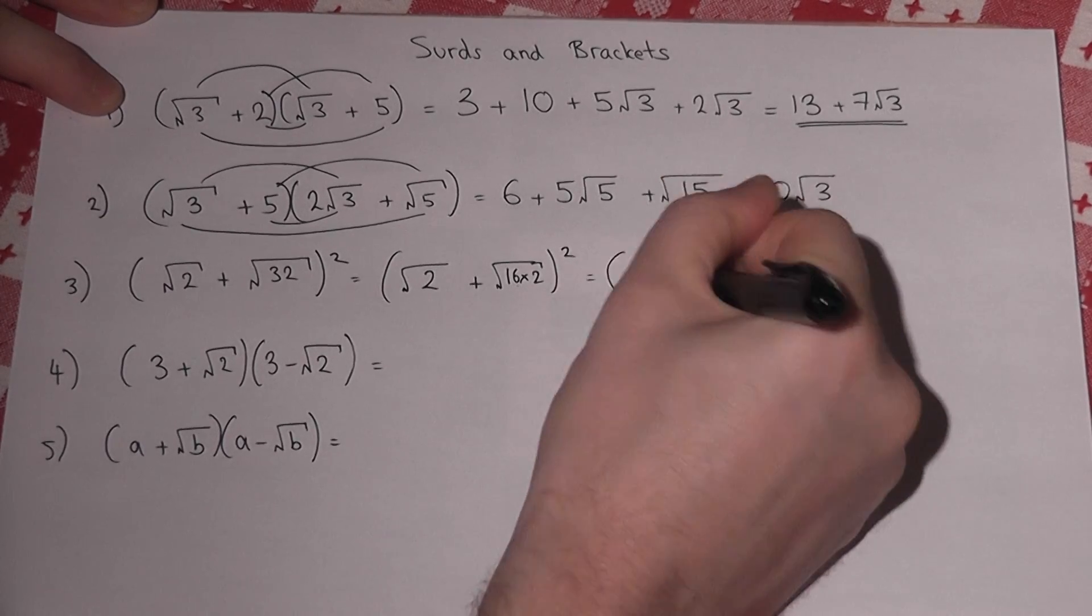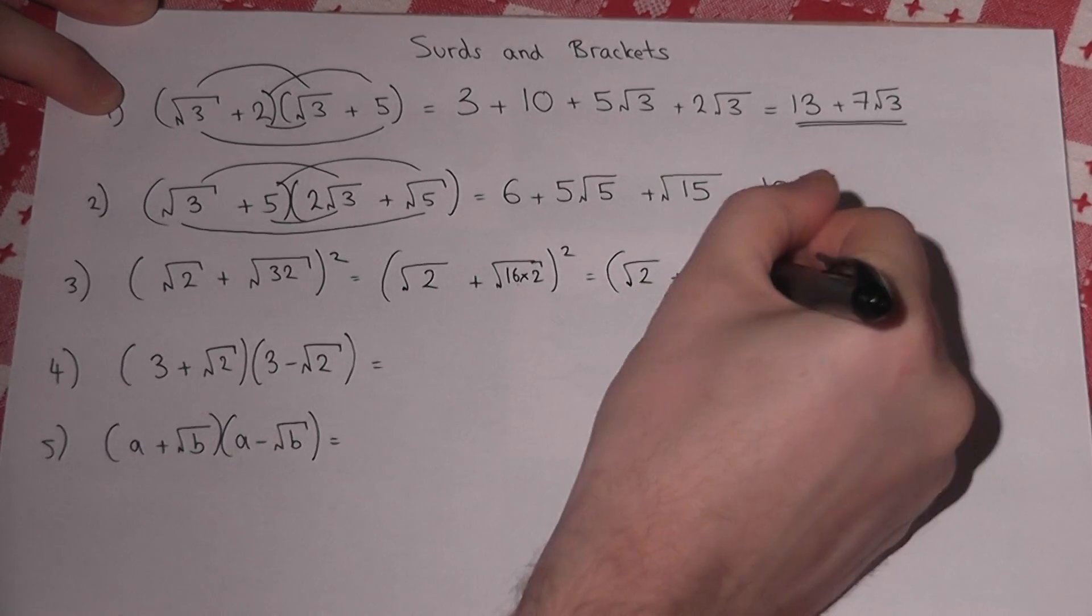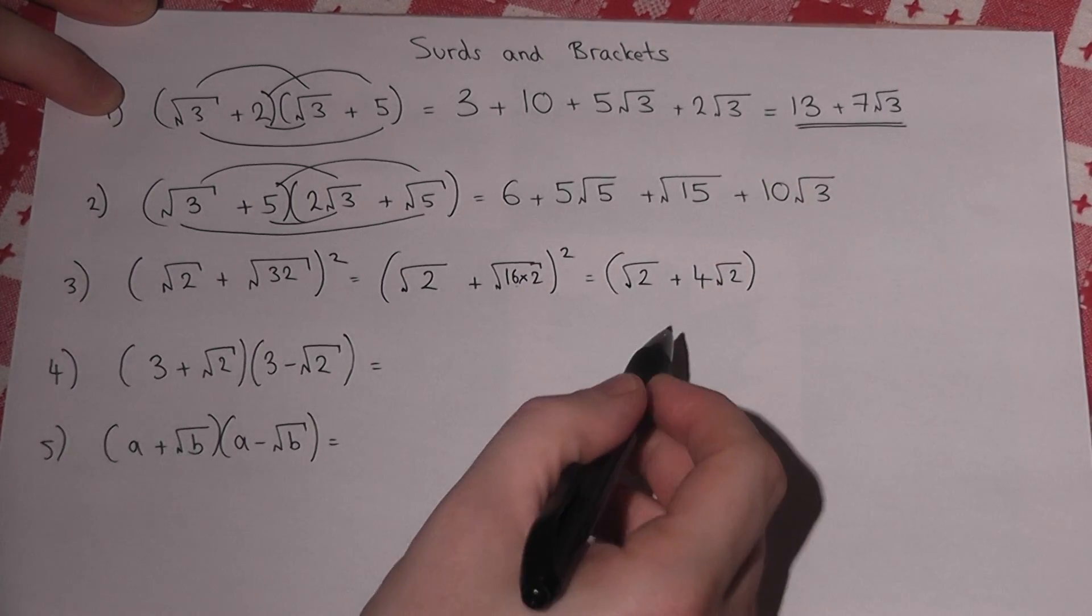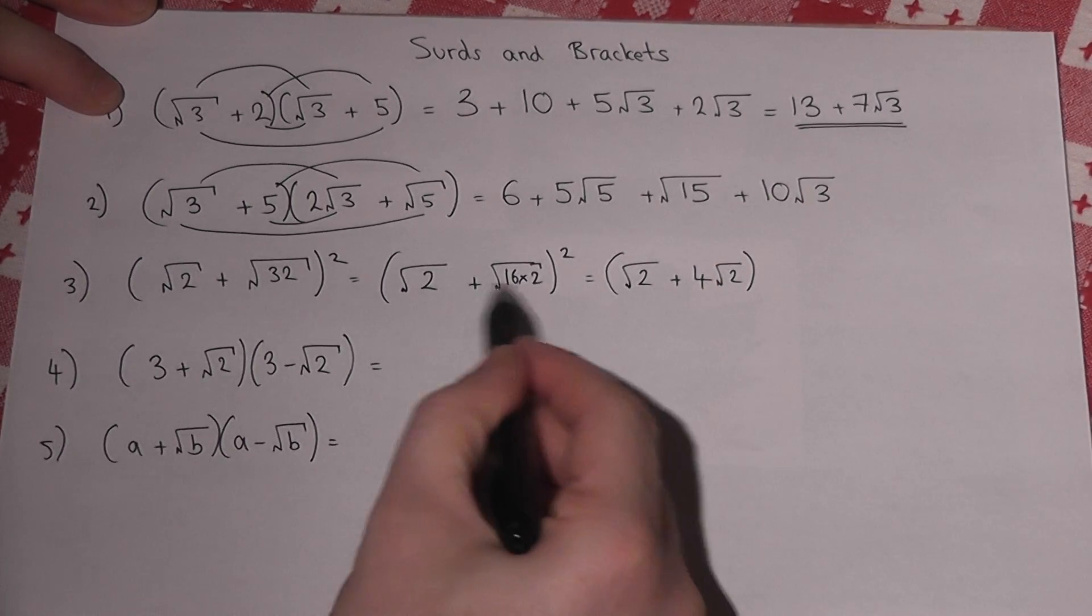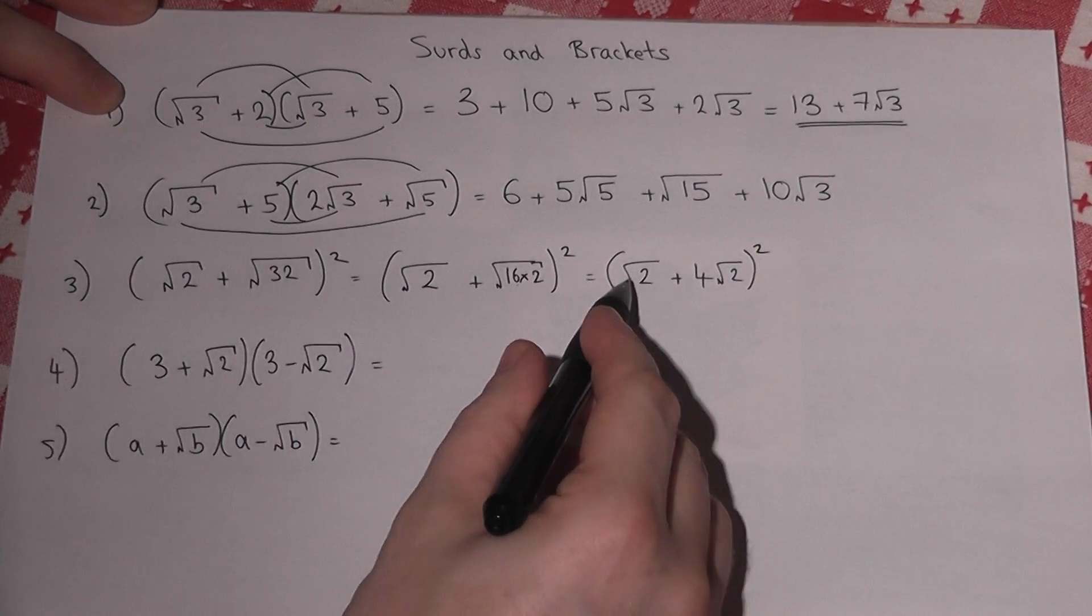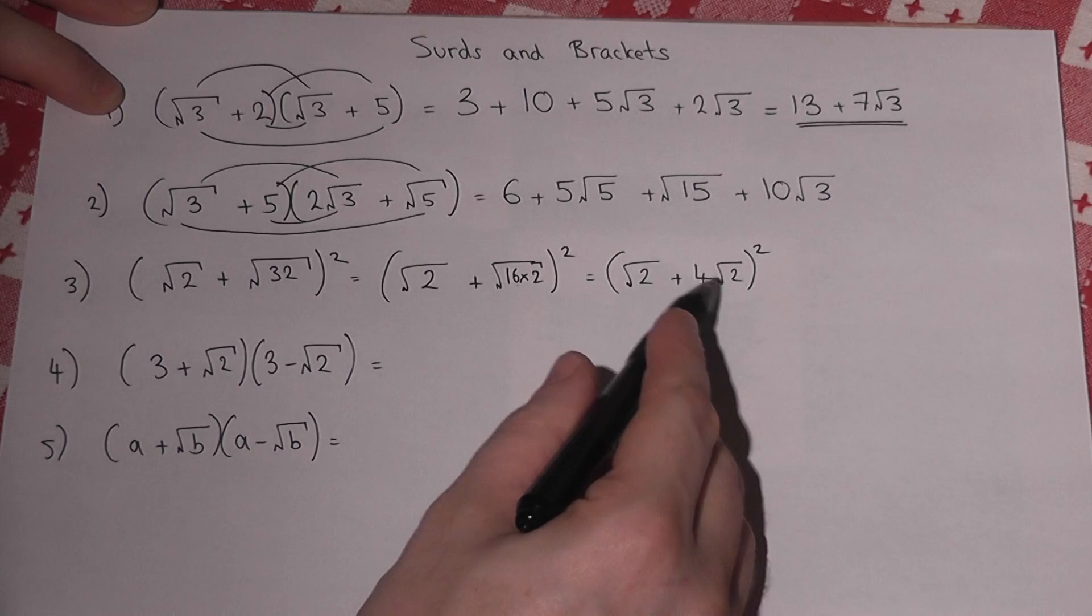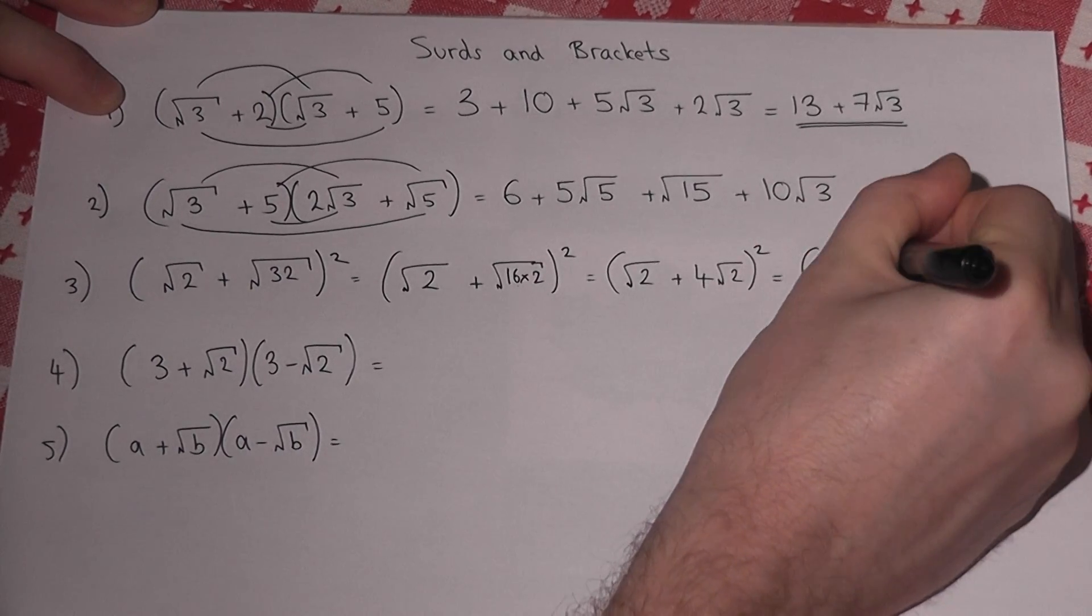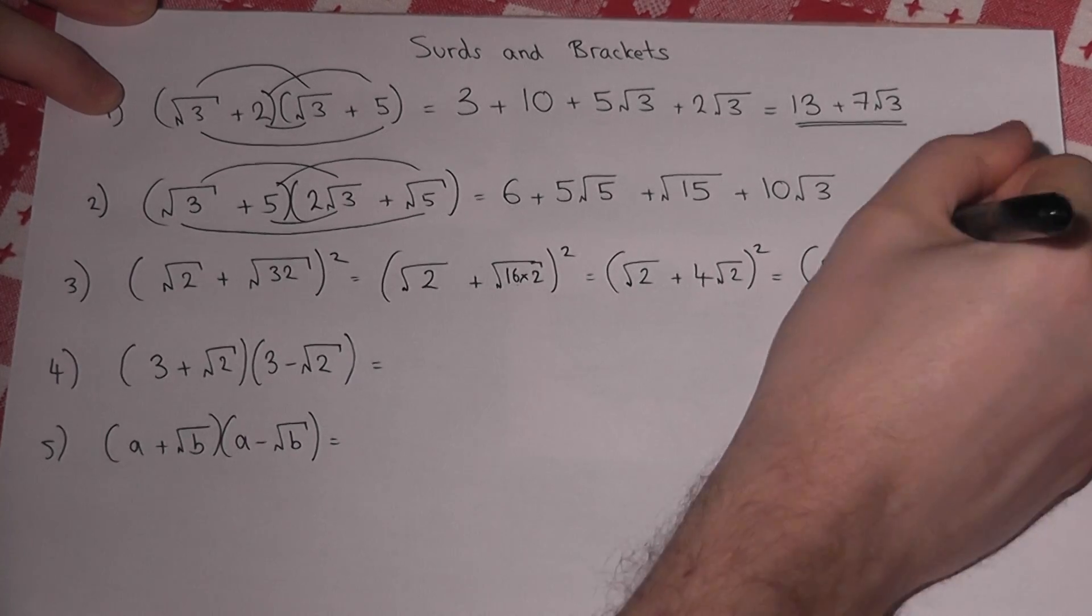This equals root 2 plus 4 root 2. Again, see the video on making surds simpler for how this works with a square. Now root 2 plus 4 root 2 is 5 lots of root 2, all squared.